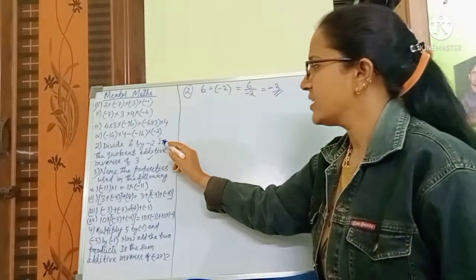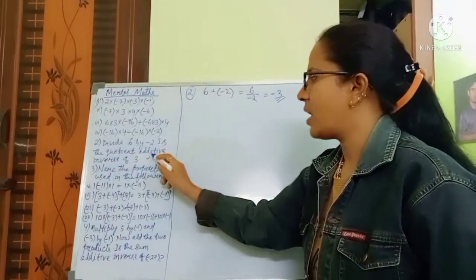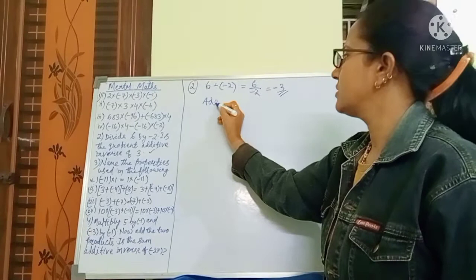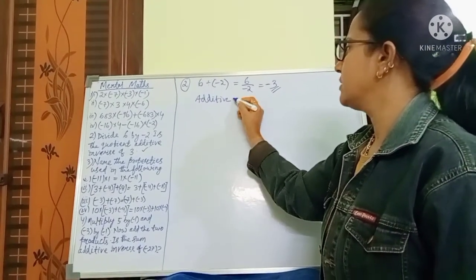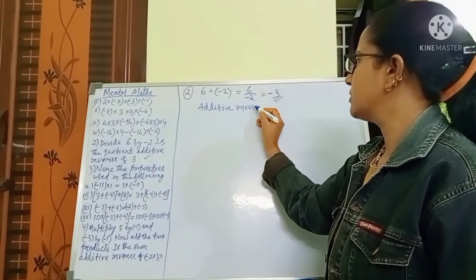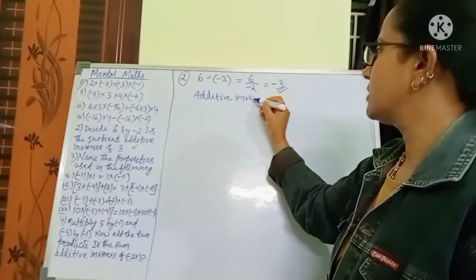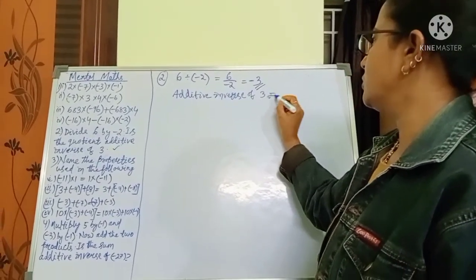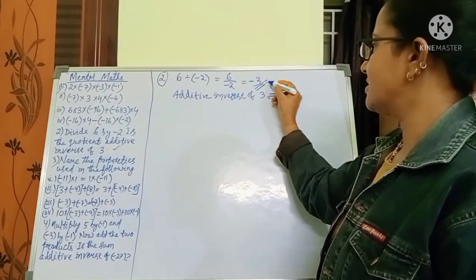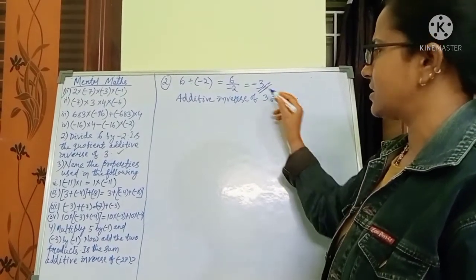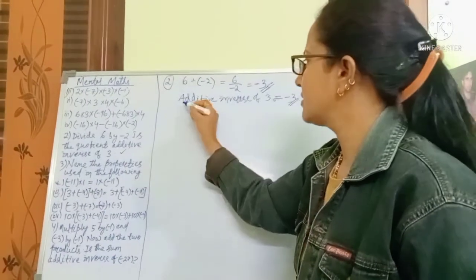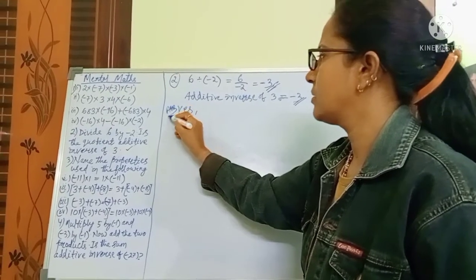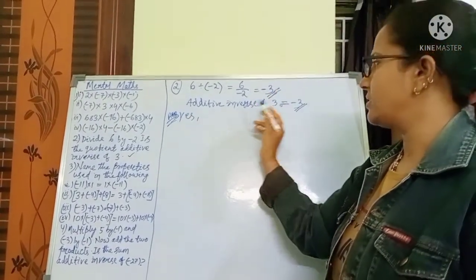The second part of the question is: is the quotient the additive inverse of 3? The additive inverse of 3 is minus 3. Here the answer is minus 3, and the additive inverse of 3 is minus 3. So yes, the answer is yes — minus 3 is the additive inverse of 3.